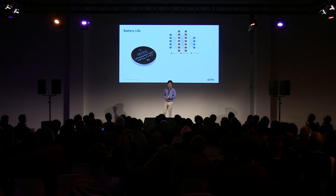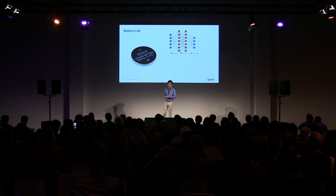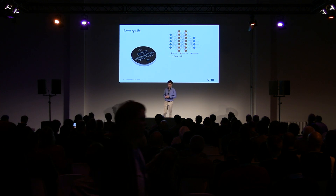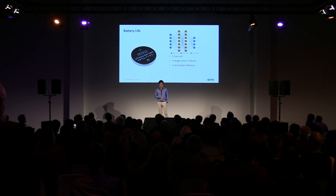To give you an idea of why energy and battery life is a primary motivation here, we did a simple calculation of what we can do on a single coin cell battery. If you have a single coin cell battery, a neural network, and you're doing one image inference every five seconds — with each image taking one second to process — we should be able to run image recognition on that single coin cell battery for more than a year. Of course this doesn't count the energy consumed by the camera, but it gives you an idea of how much energy machine learning on an MCU would theoretically consume.